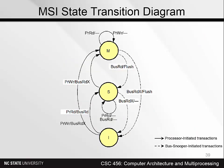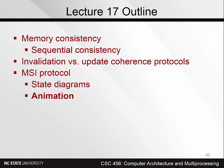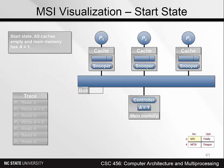Now we can put it all together and display the processor-initiated and bus-initiated transitions on the same diagram. State M is at the top, state S in the middle, and state I at the bottom — signifying that a higher state means more control over the block. The animation starts with all caches empty and the value of A in memory being 1. We will only be interested in one variable. The processors and caches are shown above the bus, and memory is shown below. Each cache has a snooper which examines all bus transactions. At the lower left is our instruction sequence consisting of 7 instructions.